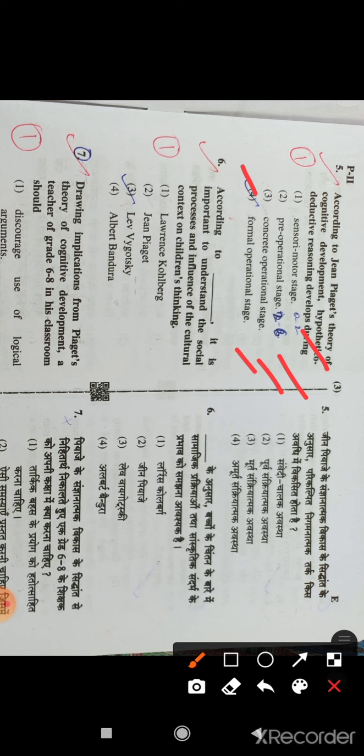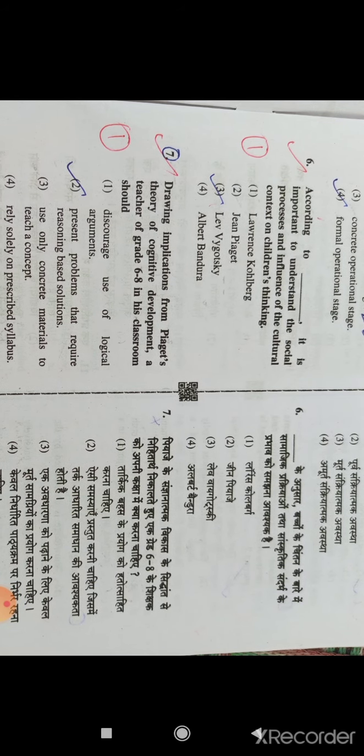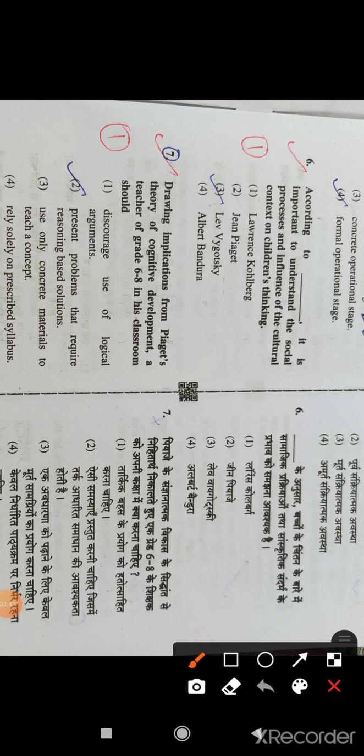Question number 6: According to dash, it is important to understand the social processes and the cultural context to understand children's thinking. This is an important theory of Lev Vygotsky, so option 3 is the right answer.